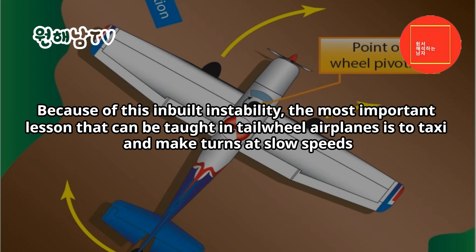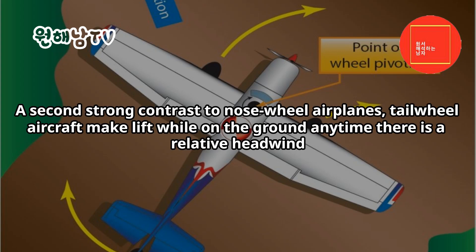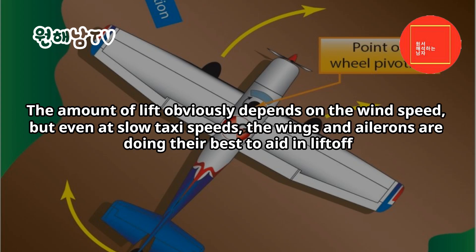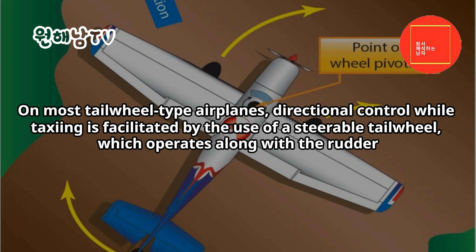Because of this built-in instability, the most important lesson that can be taught in tailwheel airplanes is to taxi and make turns at slow speeds. A second strong contrast to nosewheel airplanes: tailwheel aircraft generate lift while on the ground any time there is a relative headwind. The amount of lift depends on wind speed, but even at slow taxi speeds the wings and ailerons are working toward lift-off. This phenomenon requires care and management especially during takeoff and landing rolls, and is again unexpected by nosewheel pilots making the transition.